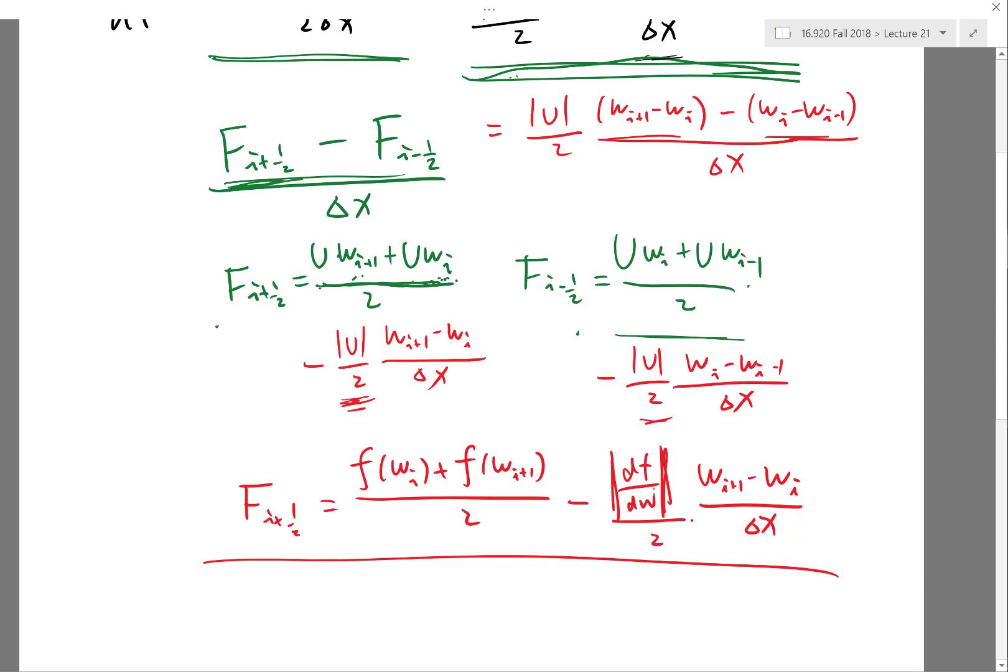Instead of taking absolute value in the scalar case, you take a norm in the vector case, and that is guaranteed to have enough numerical dissipation—maybe too much. There are better Riemann solvers that add less dissipation, but they have to be equation specific. Just taking the norm of df/dw is one way of getting an approximate Riemann solver that is general across different equations. We'll continue this next lecture and demonstrate this for shallow water equations and also discuss finite volume in multiple dimensions.